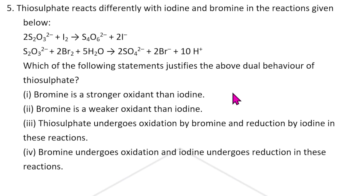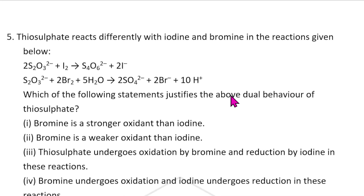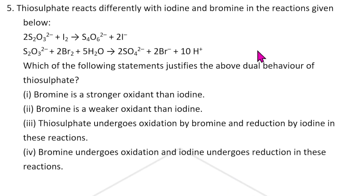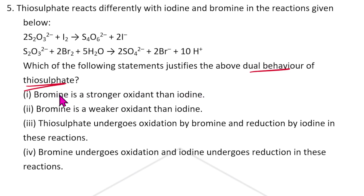Fifth question: Thiosulfate reacts differently with iodine and bromine. What is the dual behavior of thiosulfate? In S₂O₃²⁻, the oxidation state of sulfur: 2x − 6 = −2, so 2x = 4, x = +2.